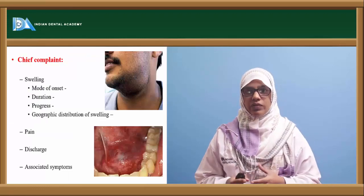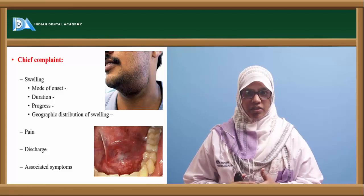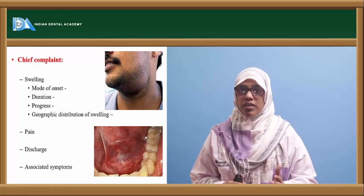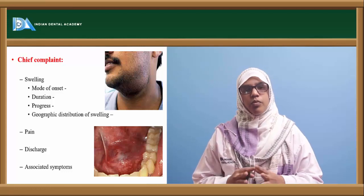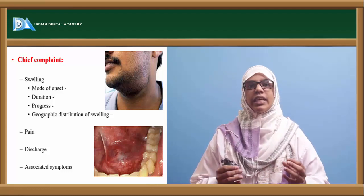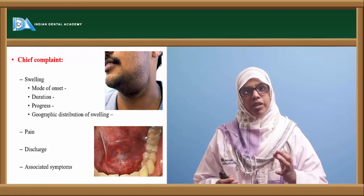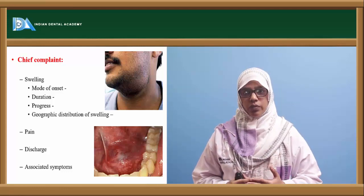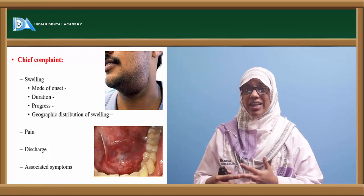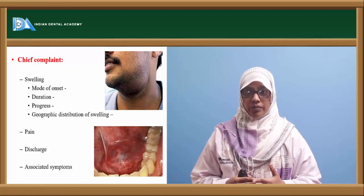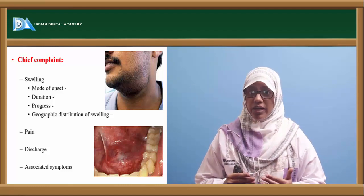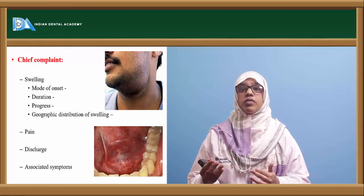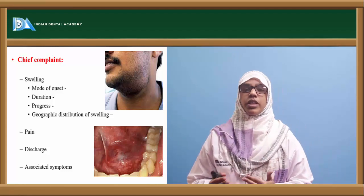Before we move on to diseases of the salivary gland, we should know how to examine it. Examination always starts with a complete case history. When a patient comes with a salivary gland problem, most commonly with swelling in the parotid, submandibular, or sublingual region, ask about the mode of onset — whether it was acute, due to trauma, or gradual — and the duration. Also ask whether the swelling increases and decreases, particularly with eating, which suggests salivary calculi.